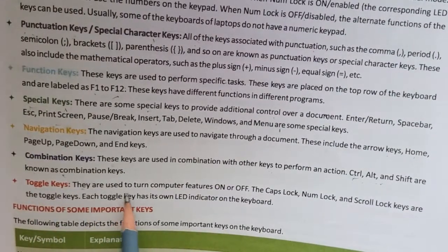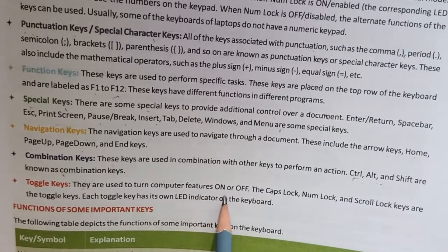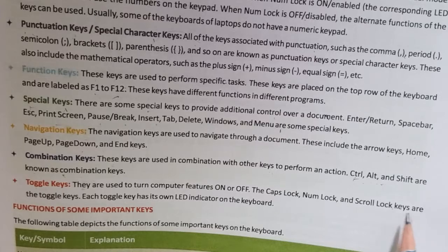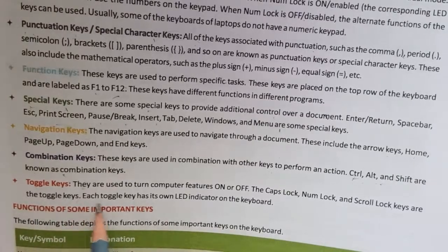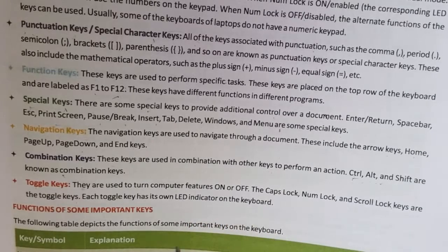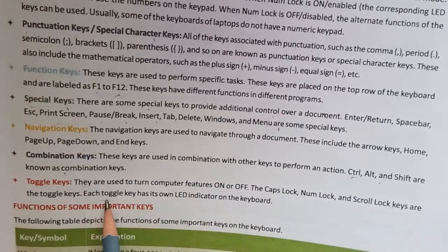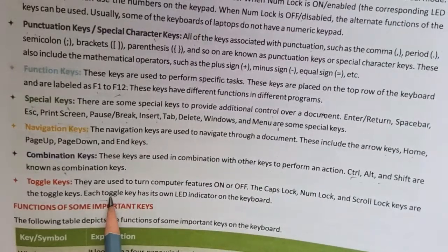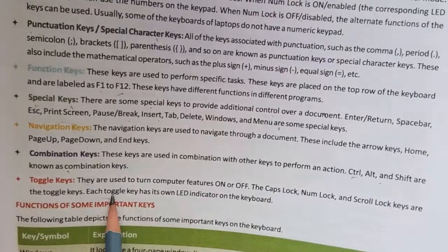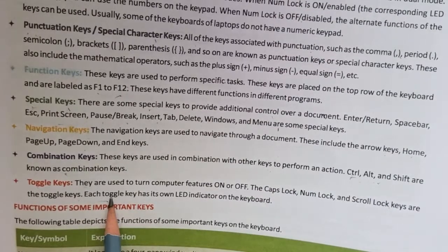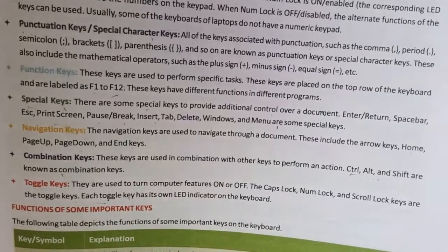Toggle keys are used to turn a computer feature on or off. The Caps Lock, Num Lock, and Scroll Lock keys are toggle keys. Each toggle key has its own LED indicator on the keyboard. For example, the Num Lock key — if you want to lock it, press the key and the light indicator turns on.